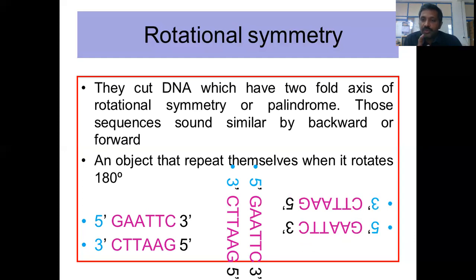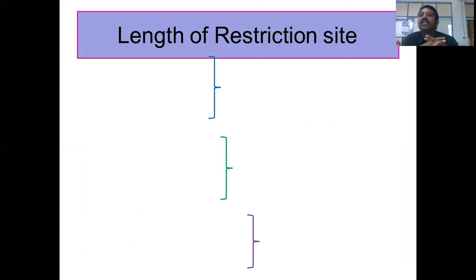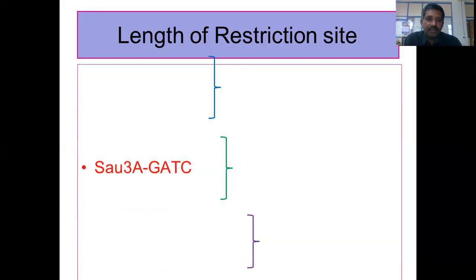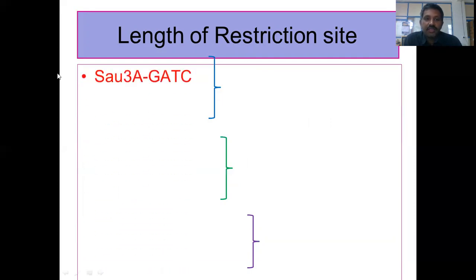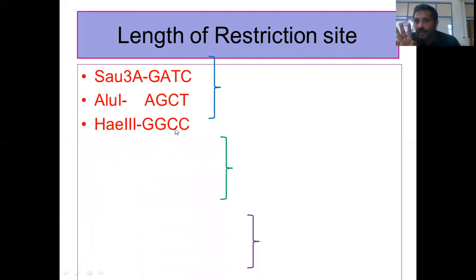The next important feature is the length of restriction sites. These enzymes recognize restriction sites that are usually four, five, six, or eight bases long. For example, Sau3A has the restriction site GATC — a tetranucleotide. AluI has AGCT, and HaeIII has GGCC — these are all tetranucleotide restriction sites.